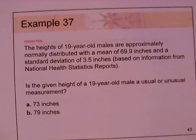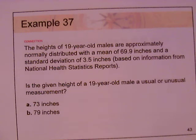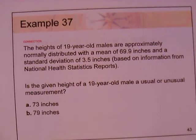Take a look at example 37. The heights of 19-year-old males are approximately normally distributed with a mean of 69.9 inches and a standard deviation of 3.5 inches, based on information from national health statistics reports. Is the given height of a 19-year-old male a usual or unusual measurement? Part A is 73 inches and part B is 79 inches.